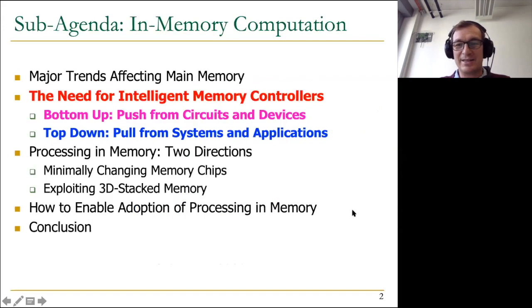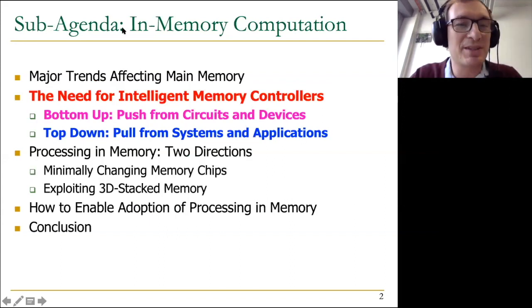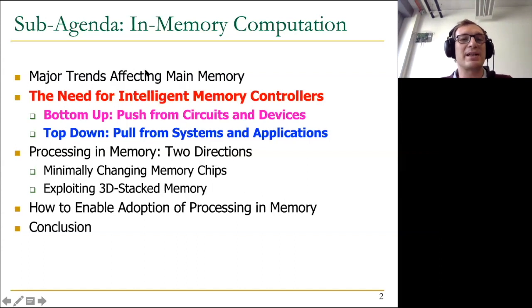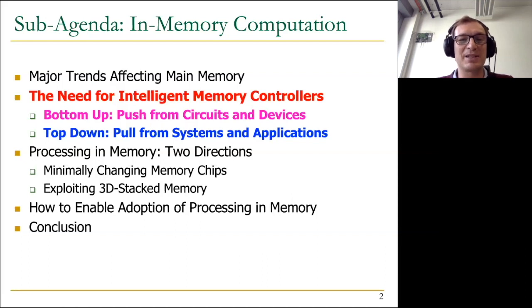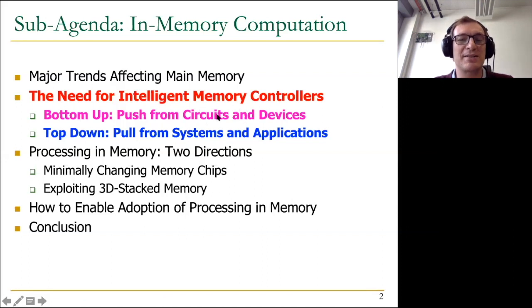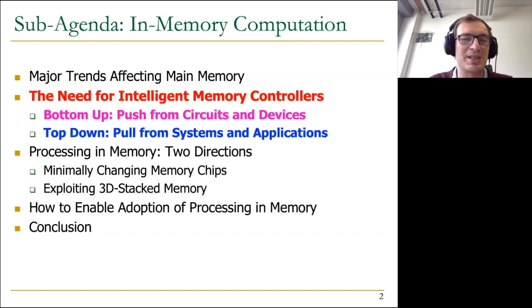Some part of this lecture will be familiar because we've covered trends affecting main memory. I'm going to remind you of some of them. We've motivated the need for intelligent memory controllers in the past few lectures, especially from the bottom-up perspective — we talked about a lot of memory scaling issues, reliability issues like refresh, row hammer, and other reliability problems. Essentially, we're having a lot of difficulty scaling main memory, including DRAM.